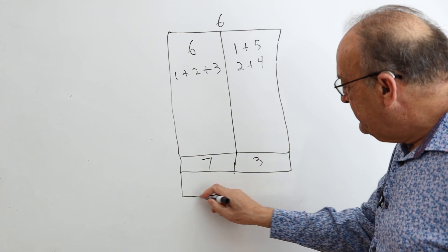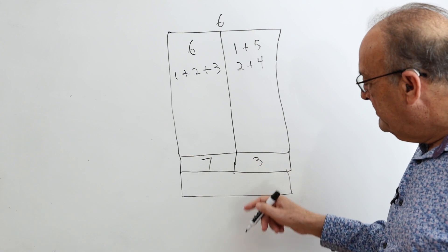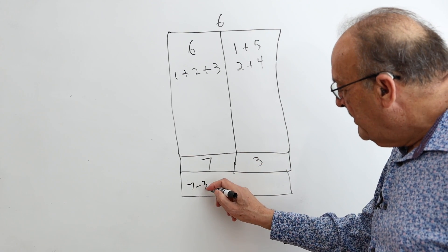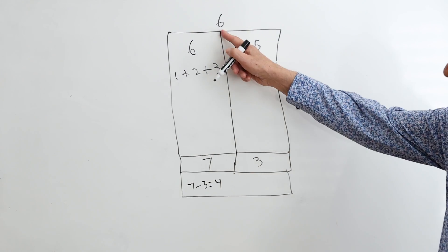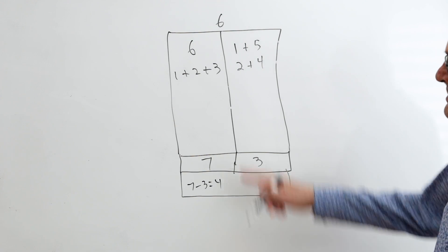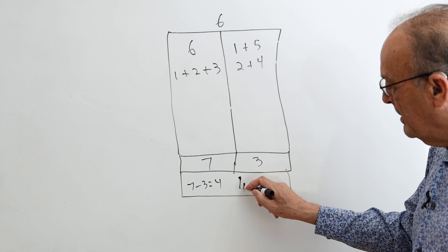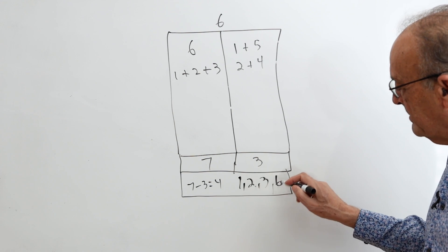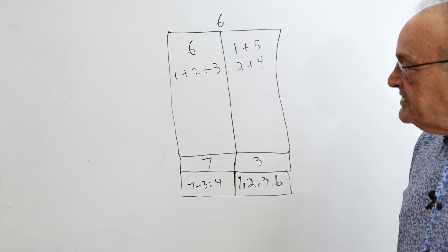So the next thing I do is I do 7 minus 3. So I'll write that down, 7 minus 3 equals 4. And I'll be getting 4 factors of 6. So basically this is a way of finding out that 6 has 4 factors, which are 1, 2, 3, and 6. So these are the factors of 6.